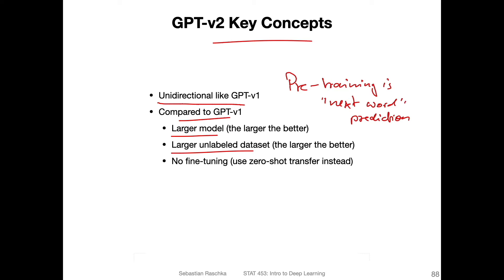The key difference, instead of just making things larger, is that now they don't do any fine-tuning. They use something called zero-shot transfer. It's somewhat related to zero-shot learning but not quite the same. Here it's really about providing some context together with the input to perform the task. I'll show you an example of how that looks.